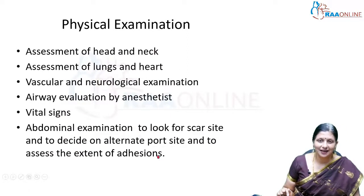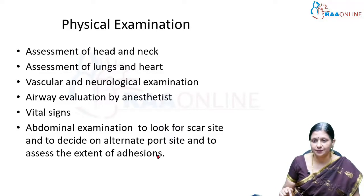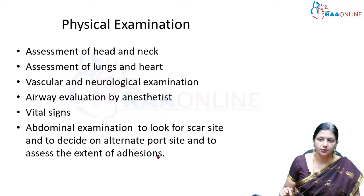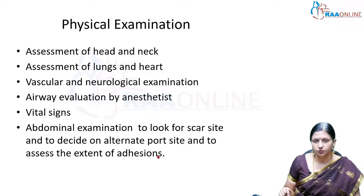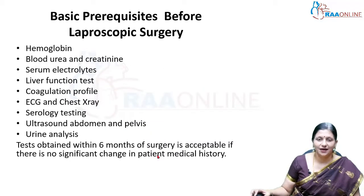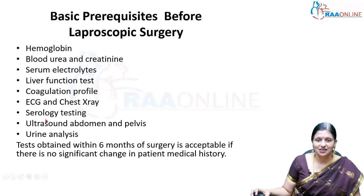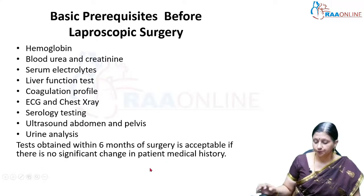Examination includes head and neck, lung and heart, vascular, neurological, airway, vital signs, and abdominal examination to look for any previous scars and to decide on alternate port entry if the umbilical port has already been used. Basic investigations include hemoglobin, blood urea, creatinine, electrolytes, liver function tests, coagulation profile, BT/CT, PC, PT/APTT, ECG, chest X-ray, serology, ultrasound, and urine analysis. Tests obtained within six months of surgery are acceptable.